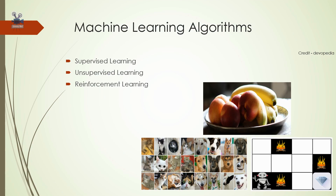Most machine learning algorithms can be classified into three types: number one, supervised learning; number two, unsupervised learning; and third, reinforcement learning. You might be wondering why there are fruits, cats, dogs, and a gaming picture in the slide — stay tuned! These are examples I'll use to explain the machine learning algorithms. I'm sure it will help you understand these algorithms much more deeply.